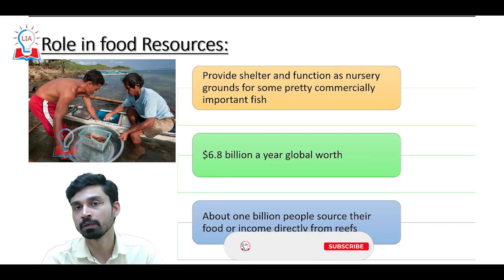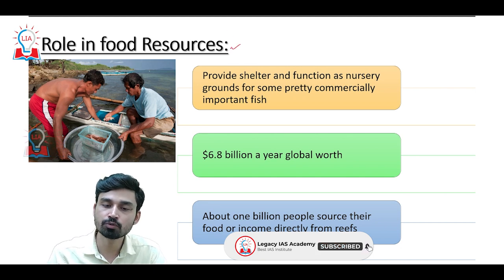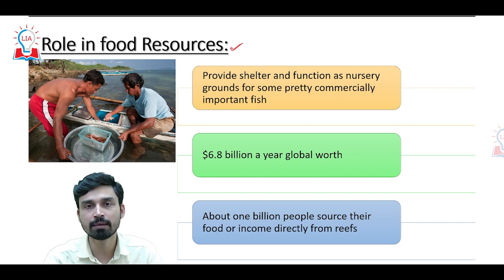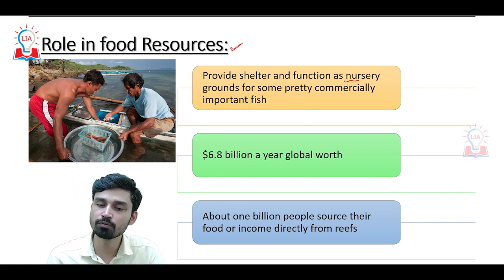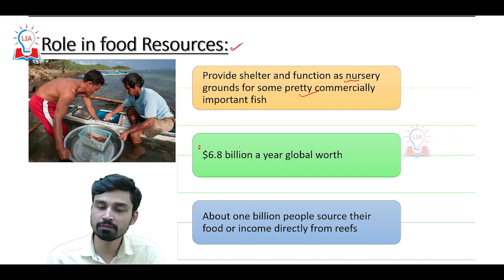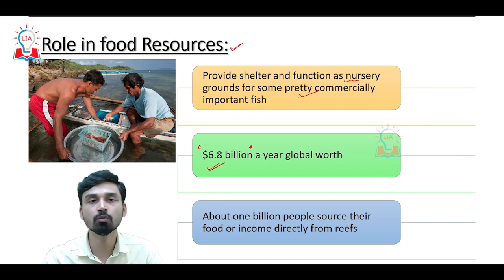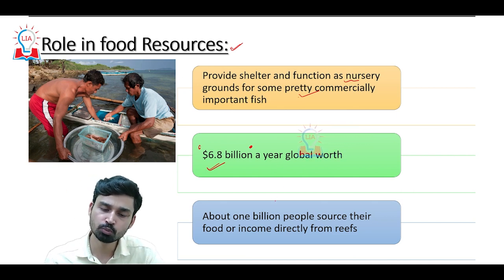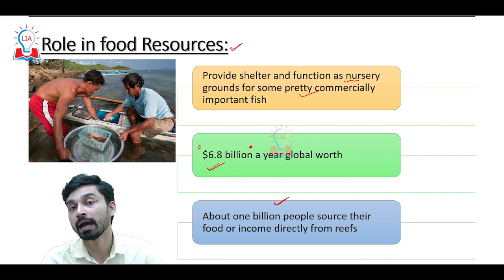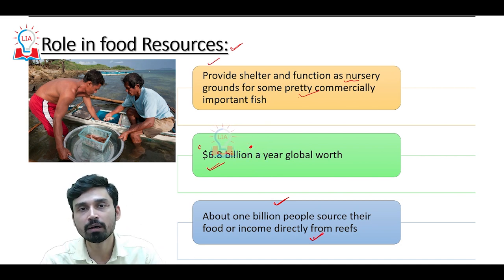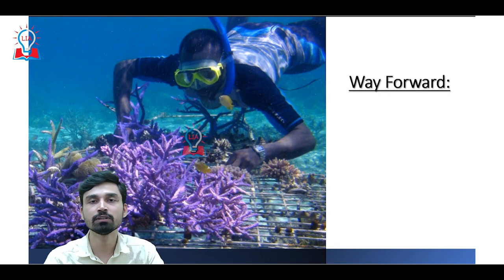Corals also play a very important role in ensuring food security. They provide shelter and function as nursery grounds for many commercially important fish such as lobsters and prawns. Overall, the fishing resources offered by corals alone have a value of almost 6.8 billion dollars a year. From a human population perspective, almost 1 billion people across the world directly source their food or income from coral reefs. Corals thus have a multifaceted role in providing resources across almost all spheres of human life.